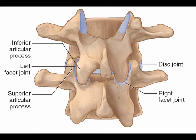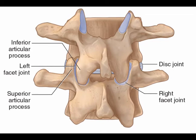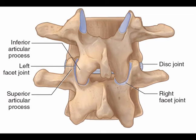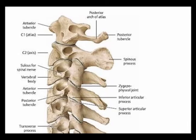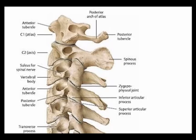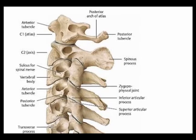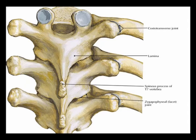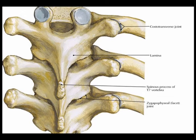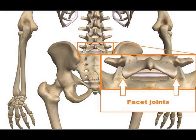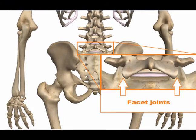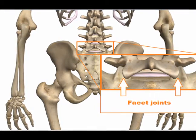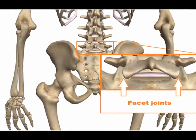The orientation of the facet joints varies by spinal location. In the cervical spine, the facet joints are inclined approximately 45 degrees from horizontal. In the thoracic spine, the facet joints are oriented approximately 60 degrees from horizontal and are also roughly rotated 20 degrees in the axial plane. In the lumbar region, the facet joints are inclined to a nearly vertical orientation.